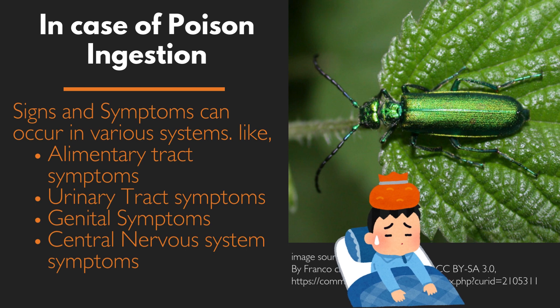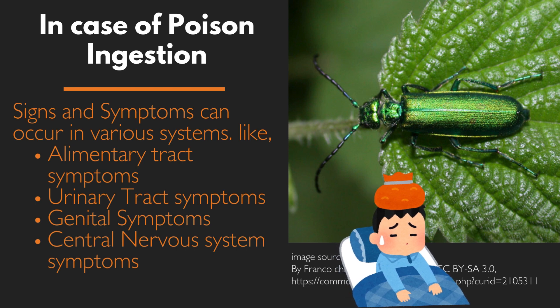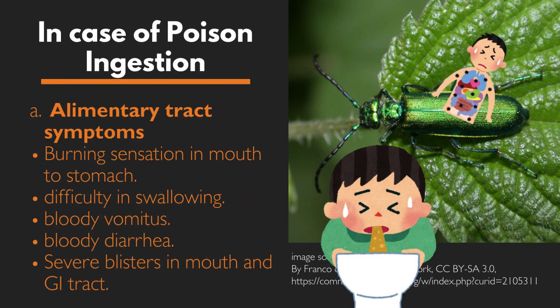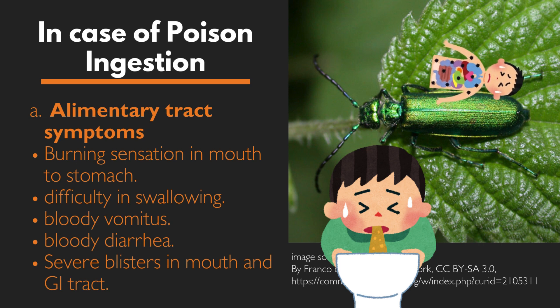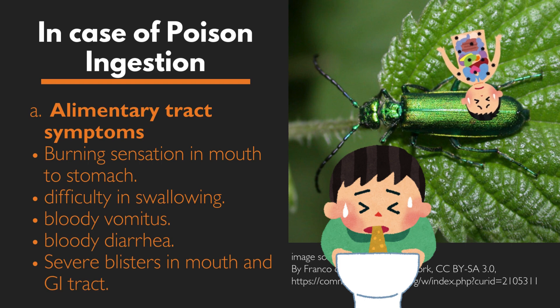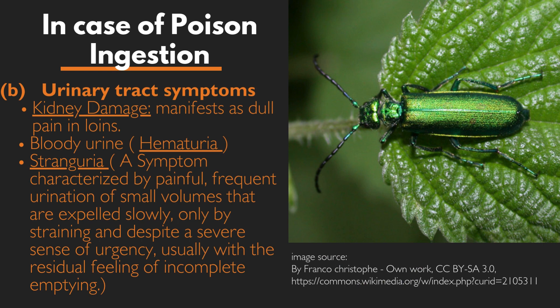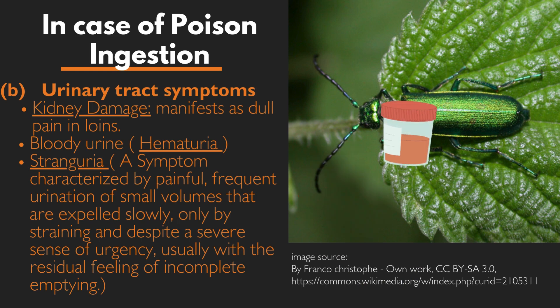Alimentary tract symptoms include burning sensation in the mouth extending to the stomach, difficulty in swallowing, bloody vomiting, bloody diarrhea, and severe blisters in the mouth and GI tract. Urinary tract symptoms include kidney damage, which manifests as dull pain in the loins and bloody urine, known as hematuria.